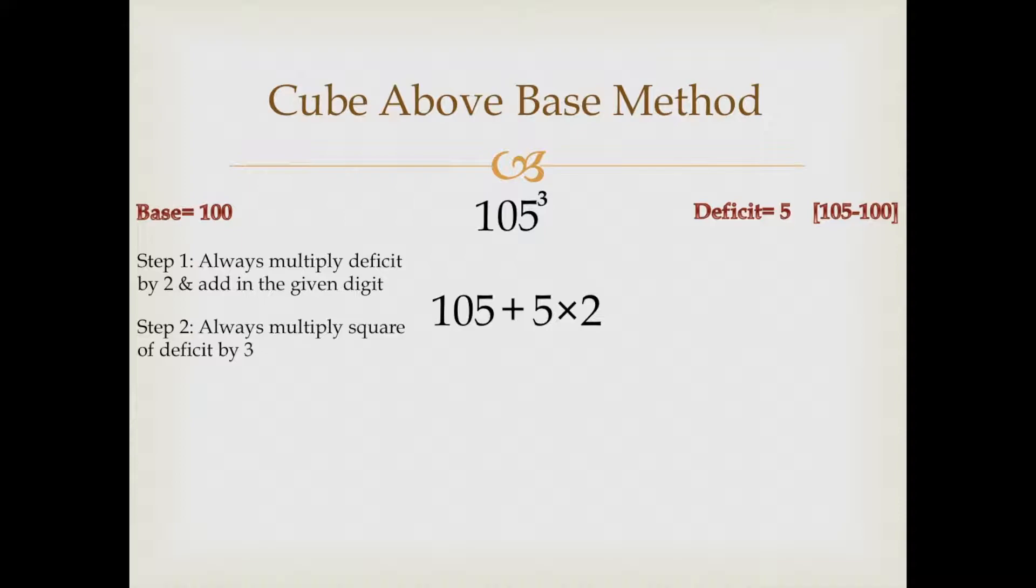Moving forward to step number two, we would now take the square of the deficit and multiply this by three. Deficit is five, five square, and we'll always multiply this by three.